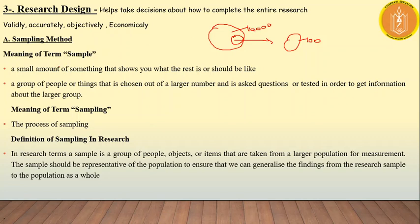We study the complete population's characteristics through the sample. A sample is defined as: a small amount of something that shows you what the rest is or should be like. By taking some people from that population and studying them, we learn about the whole population. A sample is a group of people chosen out of a larger number and asked, questioned, or tested in order to get information.